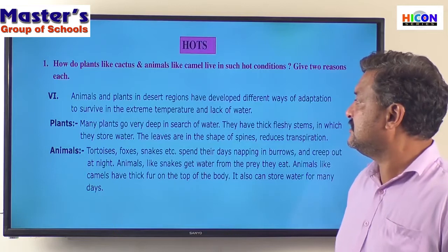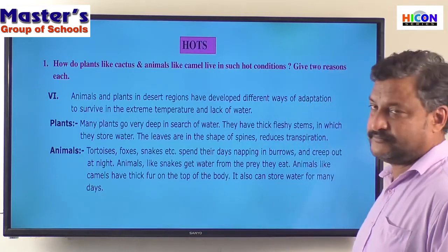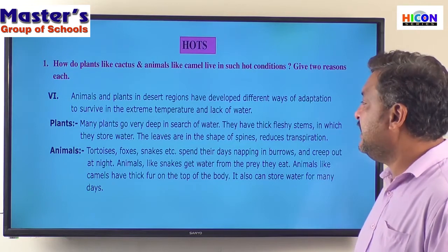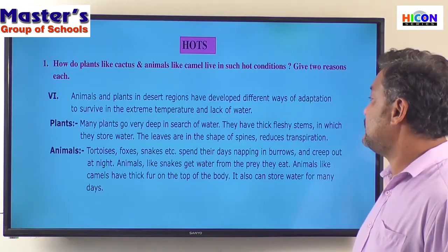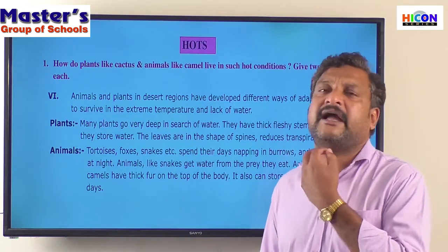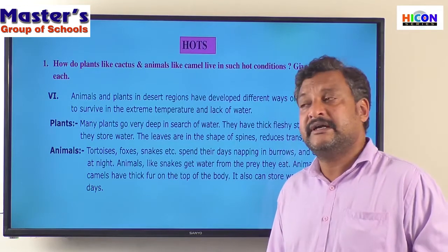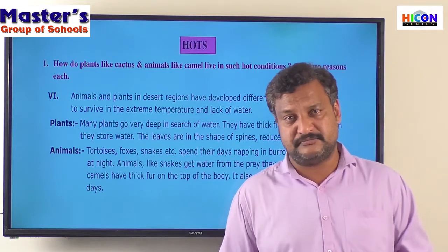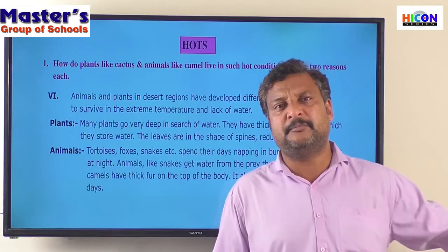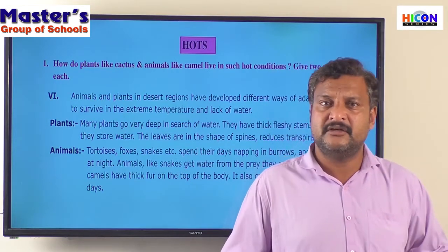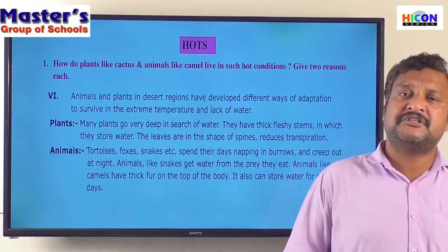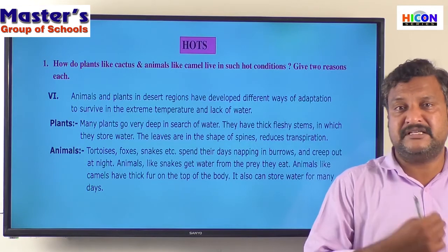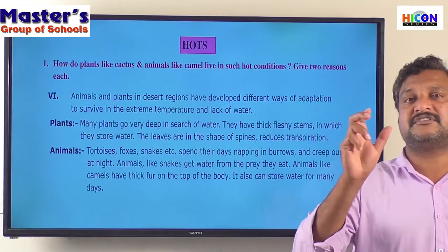How do the plants adapt? Many plants go very deep in search of water. They have thick fleshy stems in which they store water. The leaves are in the shape of spines to reduce transpiration. Cactus plants have a very long root system — their roots can go farther and deeper in search of water. Whatever water they bring up, they store as a gel-like substance in the stem itself.